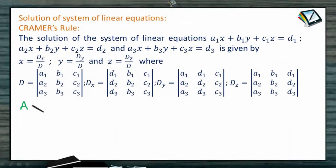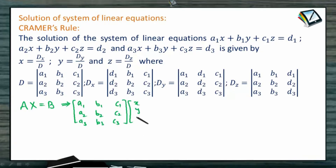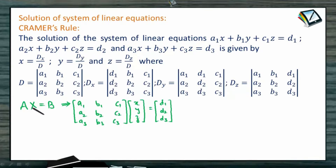If you remember, we can express this system in the form A·X = B. In matrix notation, this will be the coefficient matrix with entries a1, b1, c1, a2, b2, c2, a3, b3, c3 — times the variable matrix [x, y, z] — equals the constant matrix [d1, d2, d3].